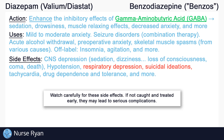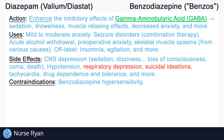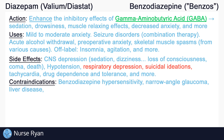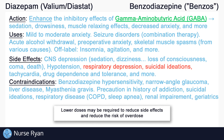Diazepam is contraindicated in patients with hypersensitivity to benzodiazepines. Also avoid use in patients with narrow-angle glaucoma, as diazepam may increase intraocular pressure in rare cases. Diazepam should not be given to those with severe liver disease or to patients with myasthenia gravis — a neuromuscular disease that causes muscle weakness which may be potentiated by diazepam. Precaution should be used in patients with a history of addiction and patients with suicidal ideations. Also exercise caution in patients with respiratory disease like COPD or sleep apnea due to the risk of respiratory depression, in patients with renal impairment, and in elderly patients.